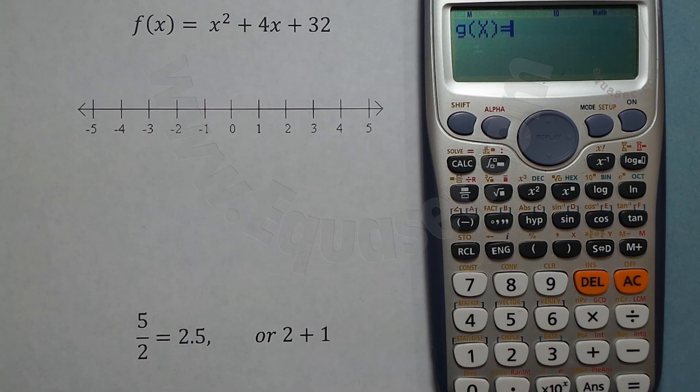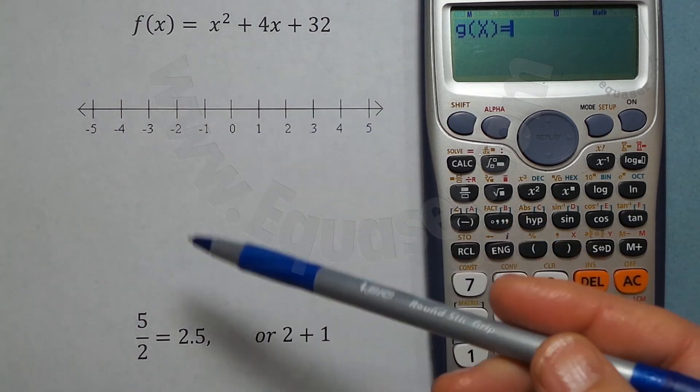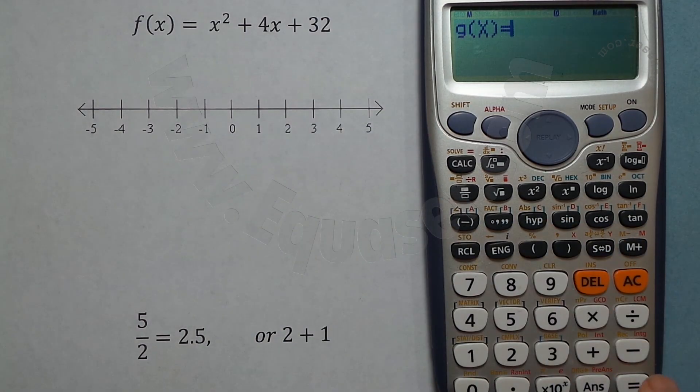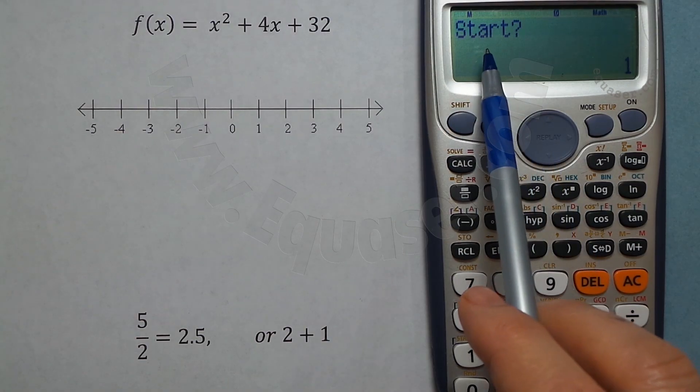Because we don't have another function, I just press equal sign and it escapes. Now it's asking me for the start value. Let's say you want to start from -2.